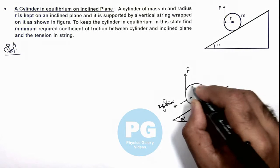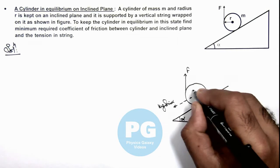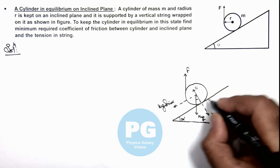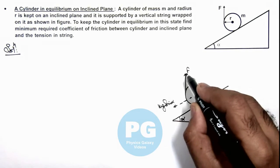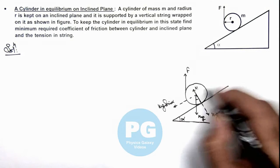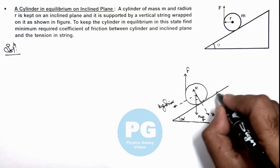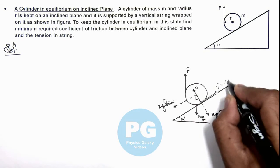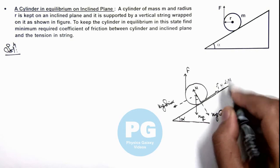A normal reaction would be acting on the cylinder from the inclined plane. And due to the torque applied by the string, cylinder has a clockwise rotation tendency which is opposed by the friction, which is in limiting case of value μN, and that will be opposing it.